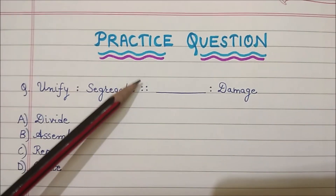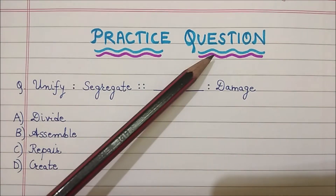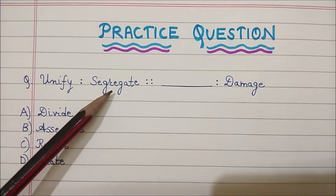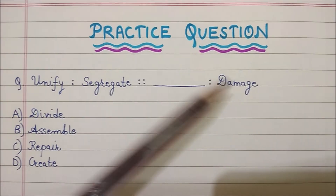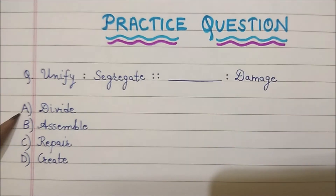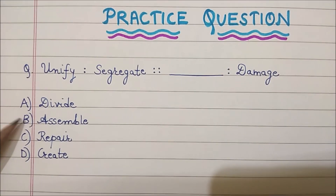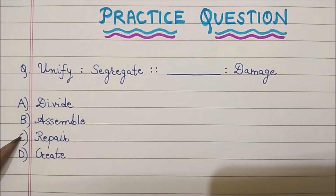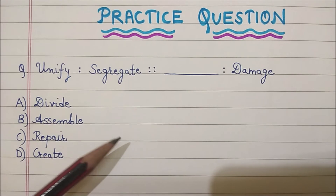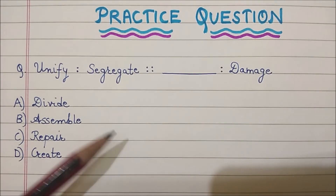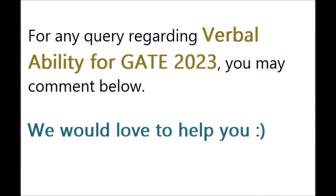Now a practice question for you: Unify is to segregate, similarly dash is to damage. Option A: divide, Option B: assemble, Option C: repair, Option D: create. Post the correct answer quickly in the comment section. If you have any query related to verbal ability for GATE 2023, you can tell us in the comment section and we will try our best to resolve your query.